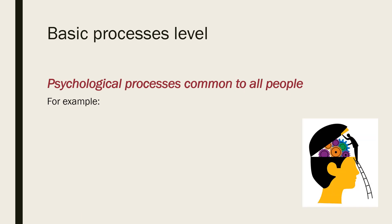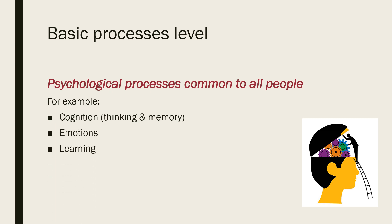The second level of explanation is the basic processes level — psychological processes underlying behaviour which are still common to all people, like the biological level. This includes cognition, which is our thinking and memory, as well as emotions and learning. There are many different types of learning which we'll examine later in the year, and all of these types of learning fit under the basic processes level.